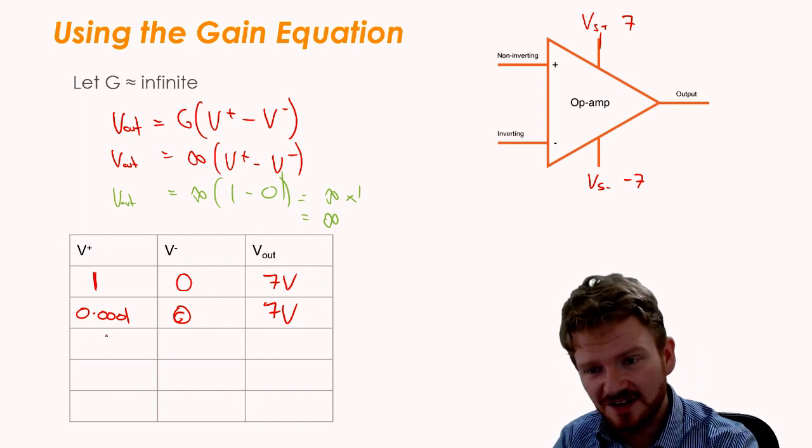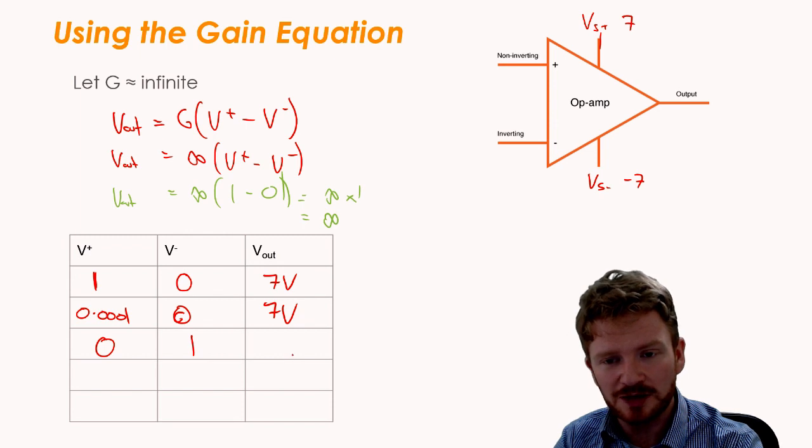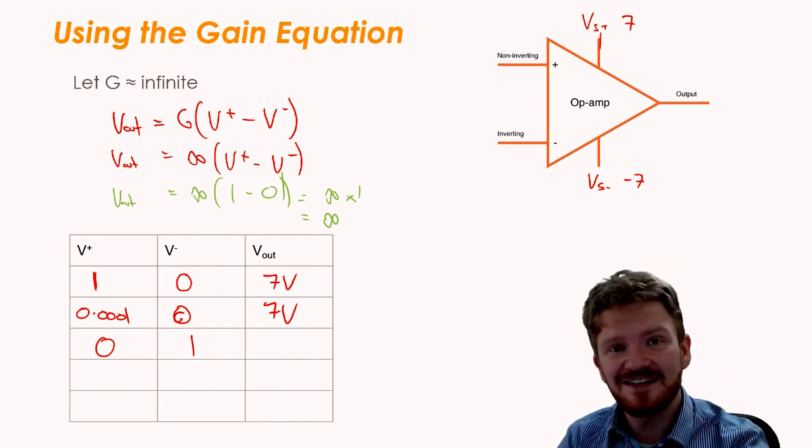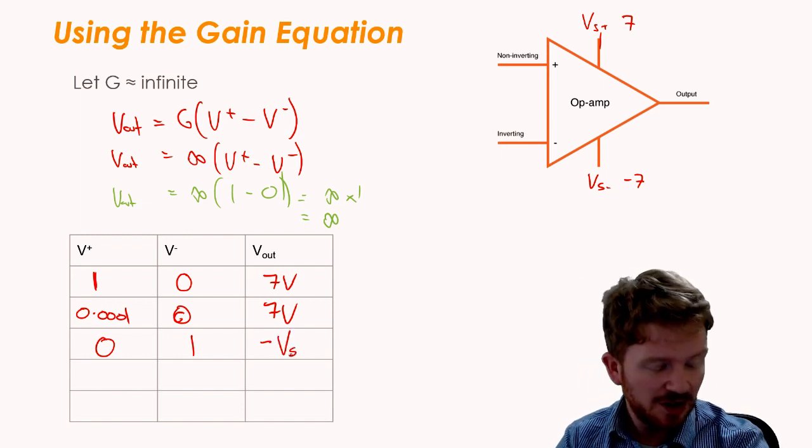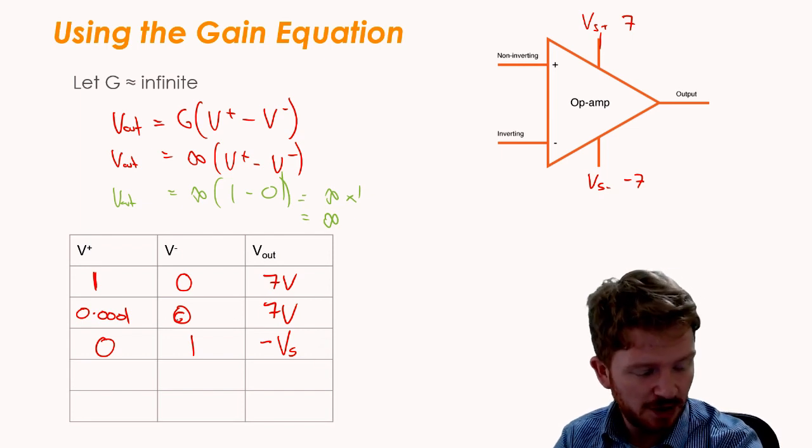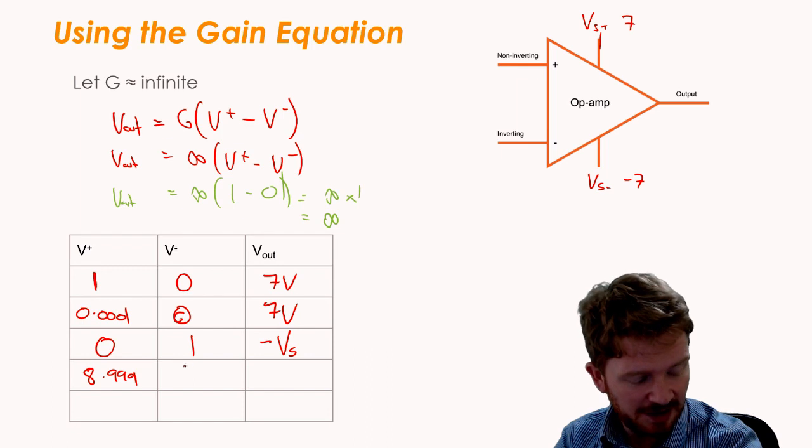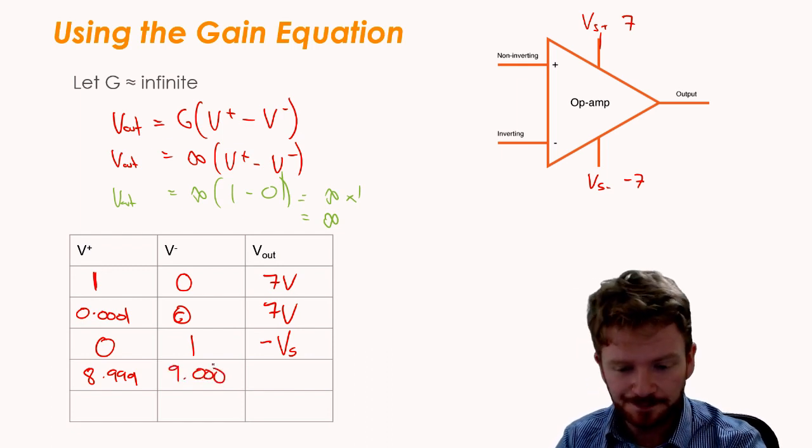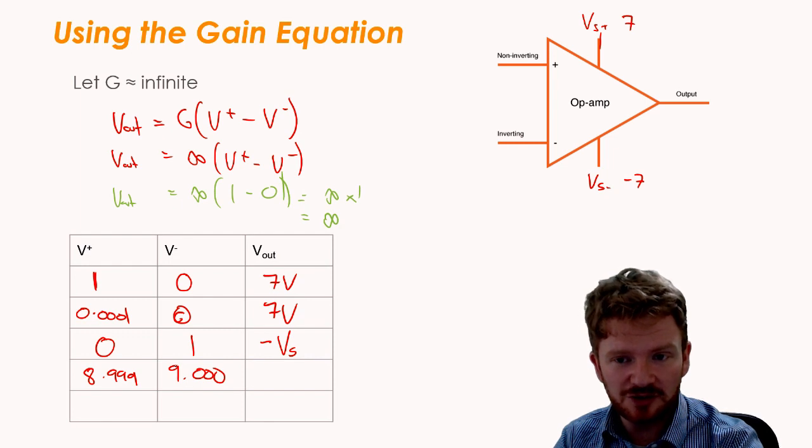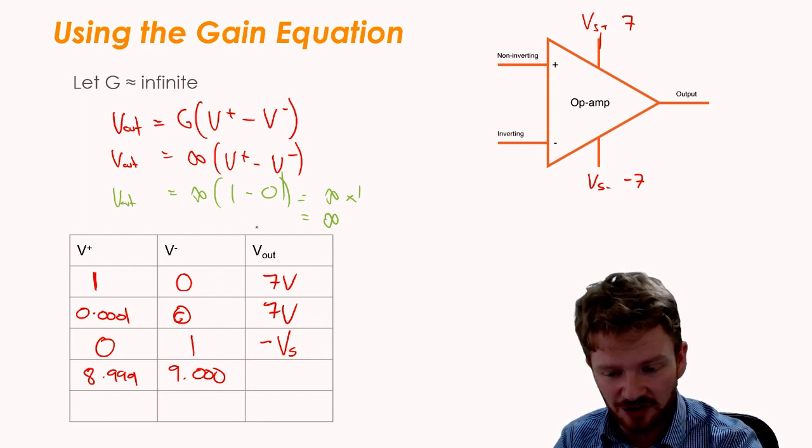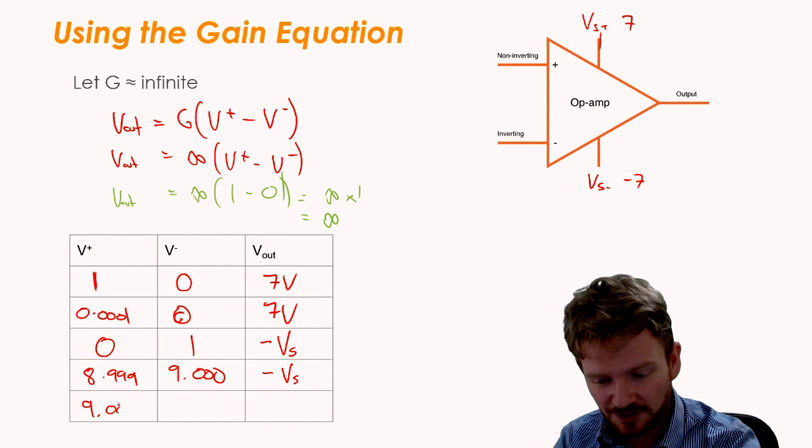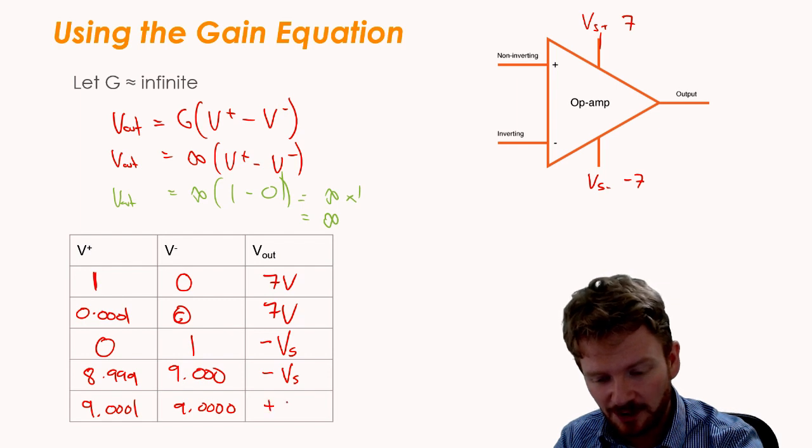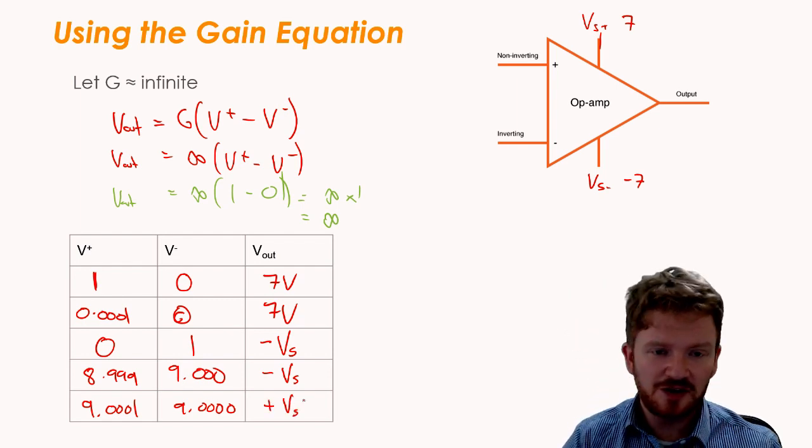So you can start to see some pretty interesting things. What about if I have 0 and 1? Well, that one will give me negative 7 volts, but I'm going to just change it now and call it minus Vs because it's the negative of the supply voltage. What about if I have 8.999 and 9.000? Well, again, looking at the equation, we can see that the inverting is larger, so we get the negative of the supply. What about if I have 9.001 and 9.0000? Well, now I'm going to have the positive supply voltage.